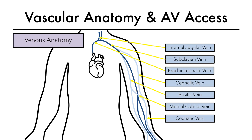The cephalic vein is an easy vein to use for access creation as it's extremely superficial and goes along the lateral aspect of the arm and forearm in almost a straight line. The basilic vein is more tricky as it runs relatively deeper in the arm, almost along the infra-axillary path, and then continues medially into the forearm.